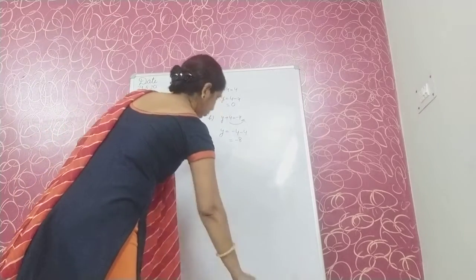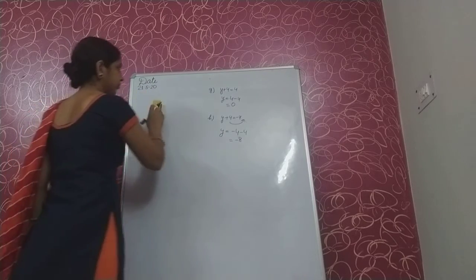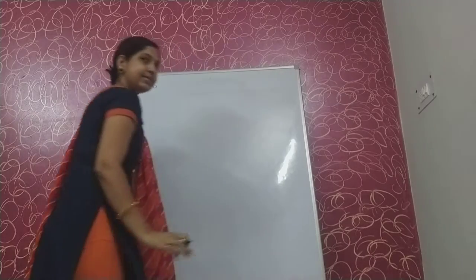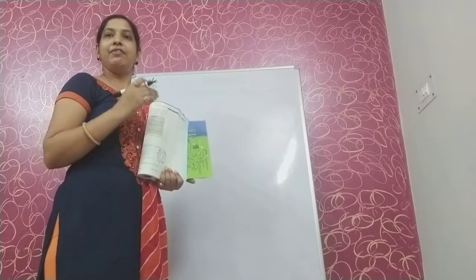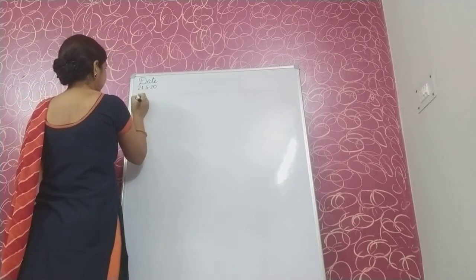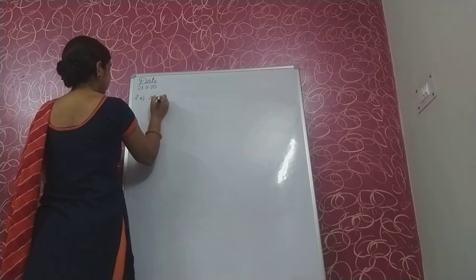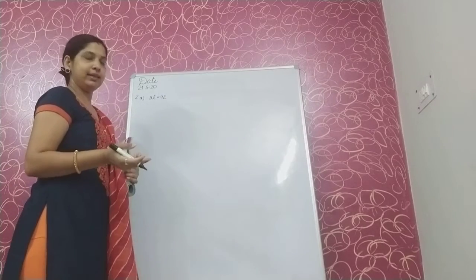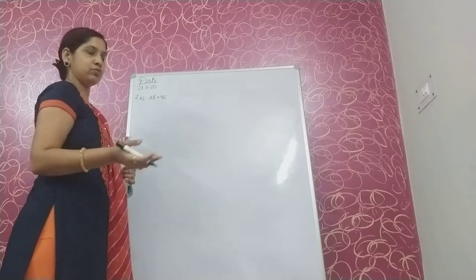Next question number 2. In this question only addition and subtraction was given with the variable. In the next question, numbers are multiplying and dividing with the variable. First part: 3L is equal to 42. We will solve some parts by balance method and some by transpose method.